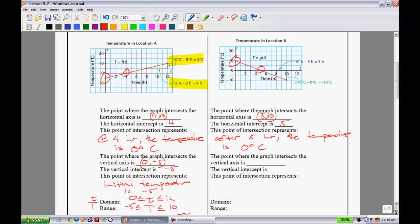What do we know about the vertical axis? It looks to be at (0, 10) right here. So that means we have a y-intercept or vertical intercept at 10. And the point of intersection, what does that mean? It means the initial temperature on this side at location B is 10 degrees Celsius.